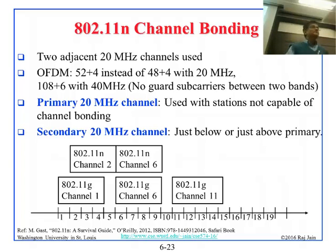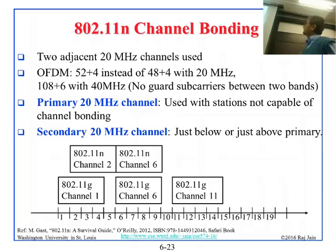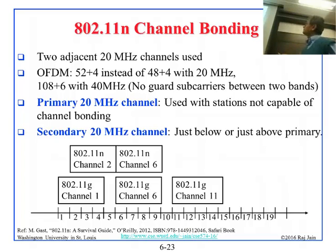You can see better movies. So two adjacent channels — 52 times 4. You can do some better optimizations. For example, if each channel was using 48 for data and 4 for pilots, with 40 megahertz you can do 108 subcarriers for data and 6 for pilots. You get a lot better than just factor two, because they're next to each other and you don't have to replicate some of the pilots.